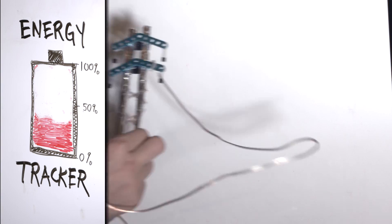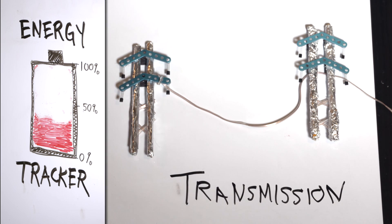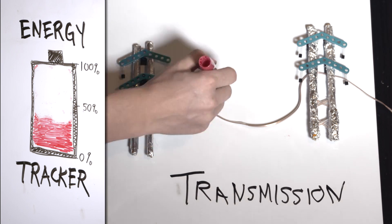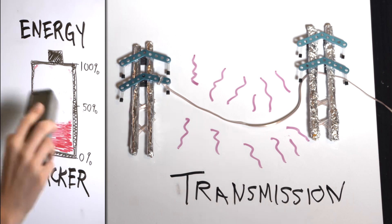Next, the electricity travels on big, long-distance, high-voltage power lines, sometimes hundreds of miles cross-country. We call this transmission. As electricity flows through wires, it heats them up. And we lose 2% of the energy just warming the air.